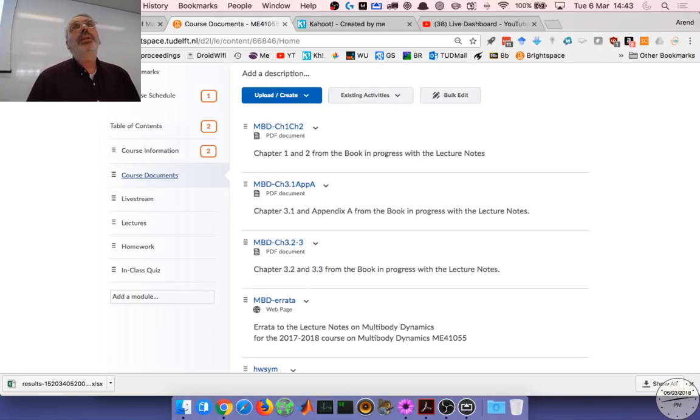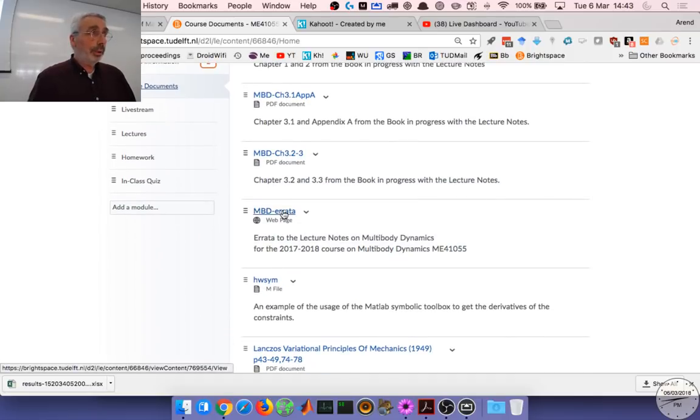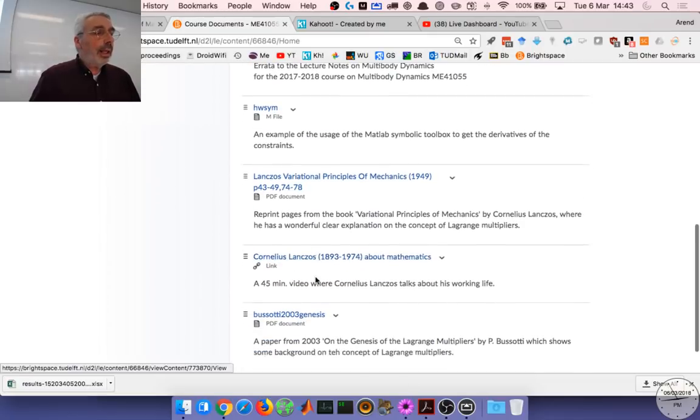Before we continue with the example of the spring added to the system, I want to point out that the lecture notes are a living document. Sorry for that, but in the end we're going to get a nice book, hopefully. So on a week-to-week basis you will find new notes there, like here this chapter. And in the errata I put the errors which are in the book now. Please don't hesitate if you find some error or mistake or unclear thing, write to me.